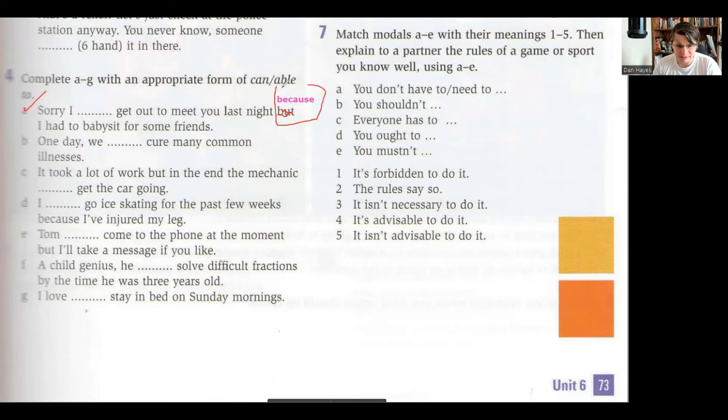So one day this could be we could cure many common diseases. One day we will be able to, that's another possibility. One day we might be able to, we may be able to - you got different options there. It took a lot of work but in the end the mechanic was able to. Yeah, logró, yeah, was able to. Now in this case he was able to, it's like that one moment, one time. In this case it would sound strange to say could, like in the sense of pudo, because could we don't use for specific moments on specific days. But this is talking about a specific moment on a specific day. That's the difference between general ability and specific ability.